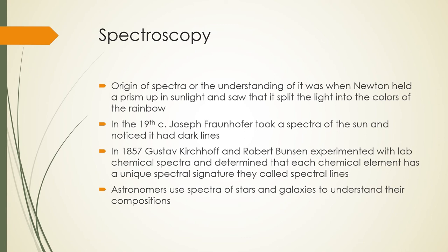Spectroscopy is second only to photography in astrophysics. The origin of spectral understanding was when Newton held a prism up to sunlight and saw it split into the colors of the rainbow. In the 19th century, Joseph Fraunhofer took a spectrum of the sun and noticed dark lines. In 1857, Gustav Kirchhoff and Robert Bunsen — yes, as in the Bunsen burner — experimented with lab chemical spectra and determined that each chemical element has a unique spectral signature, which they called spectral lines.